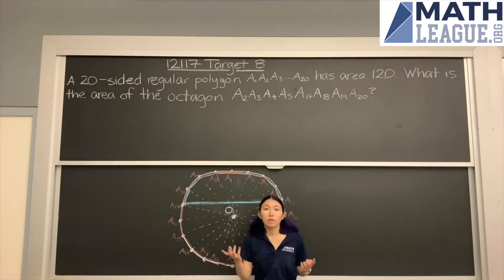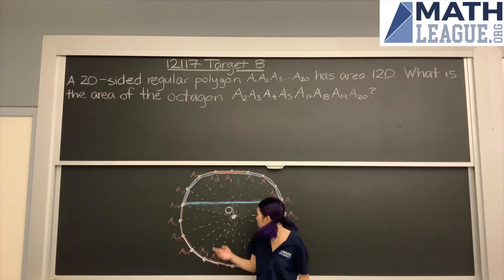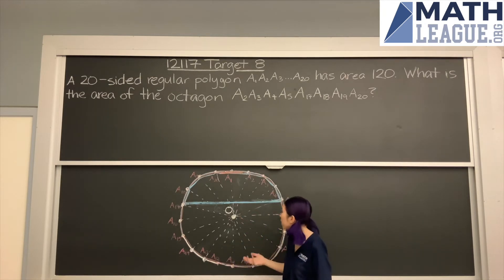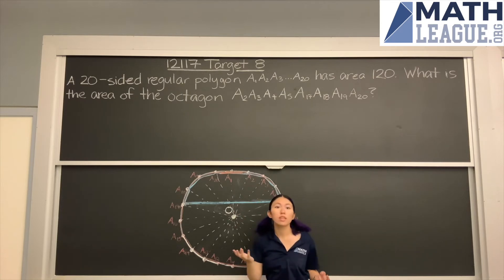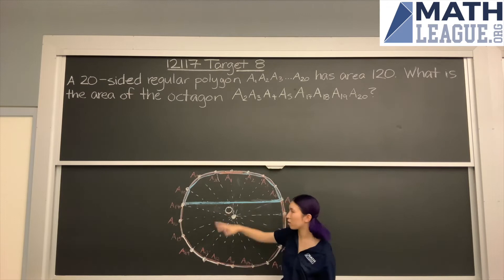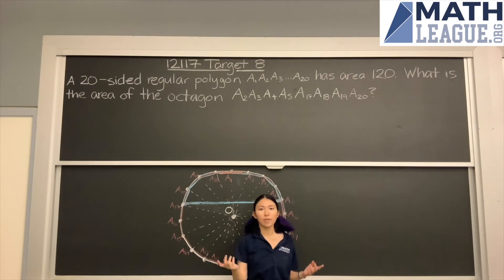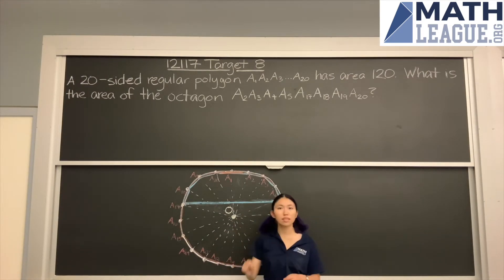So one thing we might want to think about now is, what are these white dotted lines? Well, A1 and A11 are diametrically opposite, so it's just a diameter going through O, and because this is an even number of sides, A2, A12, A3, A13, all the way down. So these white dotted lines are all diameters. They all pass through O. That's going to be important later.